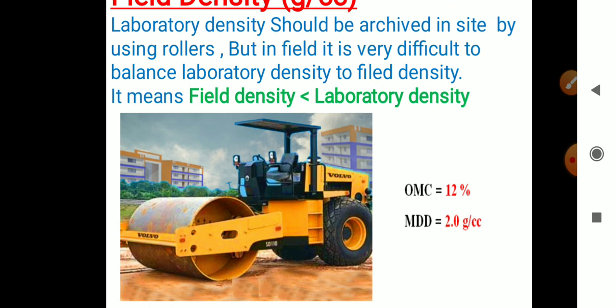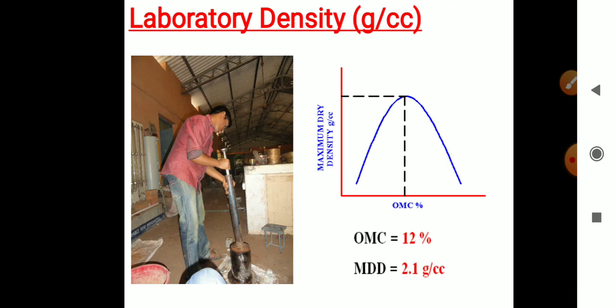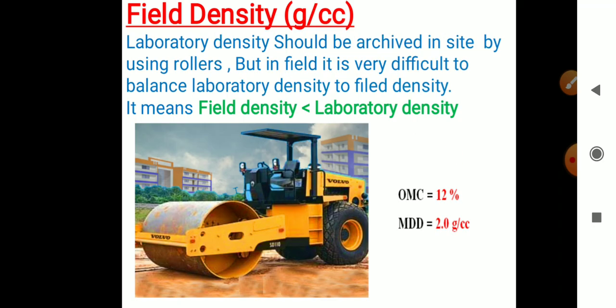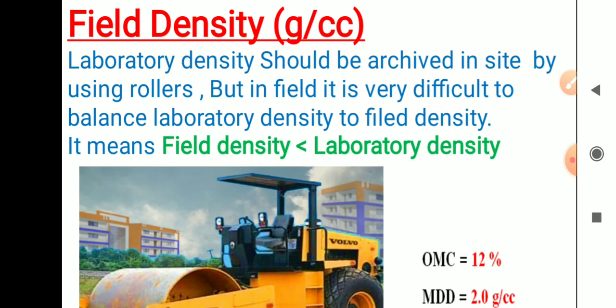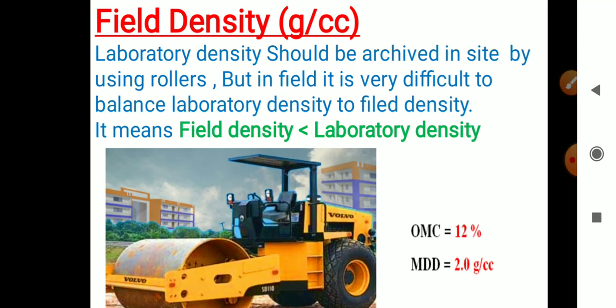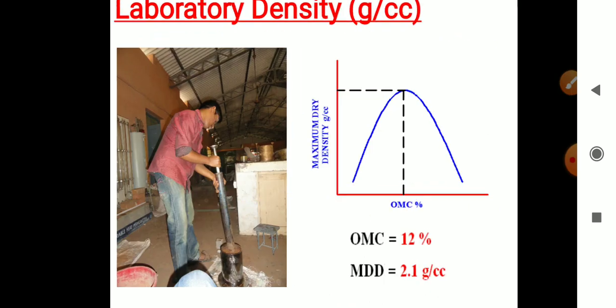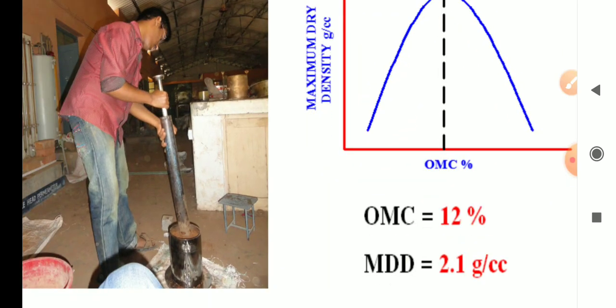We simulate the OMC of 13 percent in the field by filling water in a tank and spraying the entire area, then passing the roller. Initially the soil is loose, but after roller passes it starts achieving density and reaches a hardened state. However, it is very difficult to balance laboratory density to field density in the field.